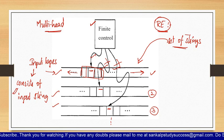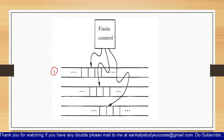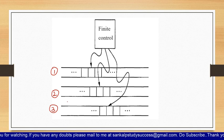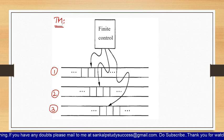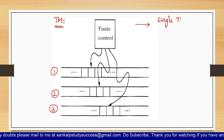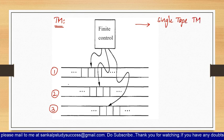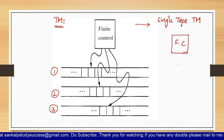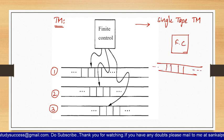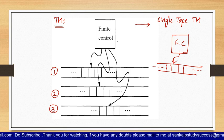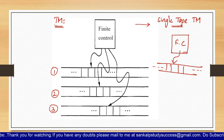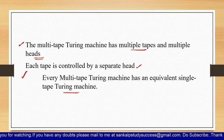If there exists a multi-tape Turing machine with multiple tapes — say tape one, two, and three — then there will also exist an equivalent single-tape Turing machine for the same machine. That single-tape Turing machine has one finite control pointing to a single tape that is infinite to both ends. So, if a multi-tape Turing machine exists, an equivalent single-tape Turing machine also exists.